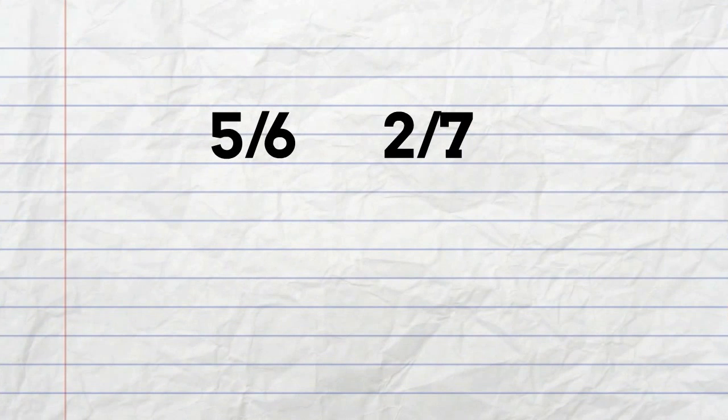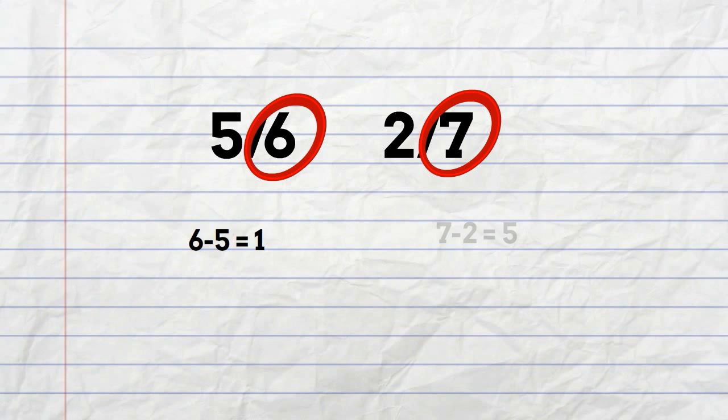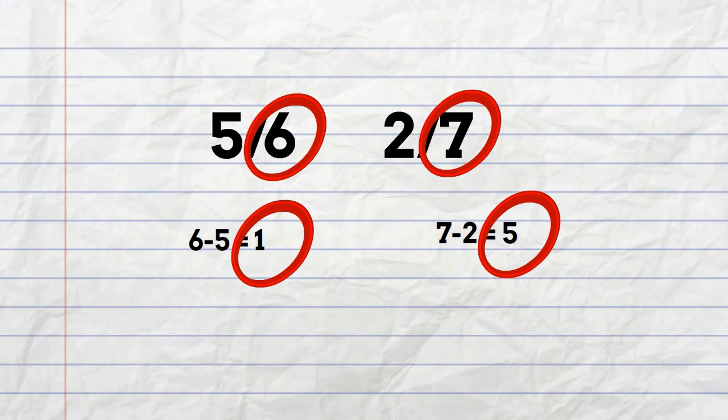And finally, if the numerators are not the same nor when you subtract the numerator from the denominator and they are not equal, you can cross multiply.